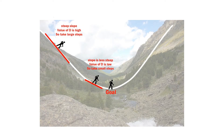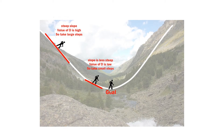Going back to the valley analogy: m is the person's current position, the derivative d corresponds to the steepness of the slope, and l is the speed at which the person moves. The new value of m is his next position, and l × d is the step size. When the slope is steep he takes longer steps; when less steep he is closer to the goal and takes smaller steps. Finally he arrives at the bottom of the valley, which corresponds to our loss function becoming zero and obtaining optimum values of m and c.